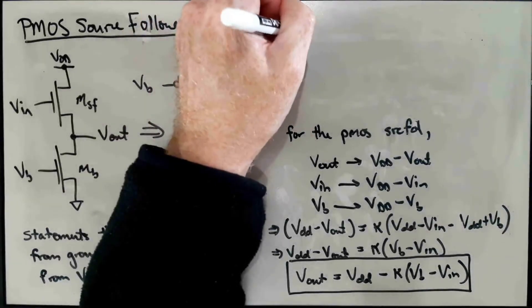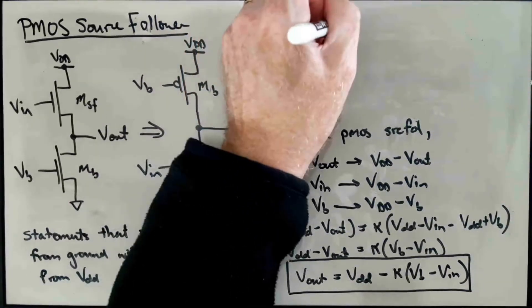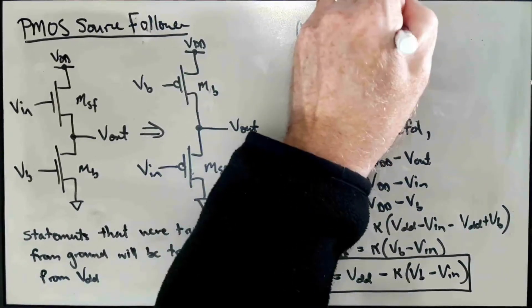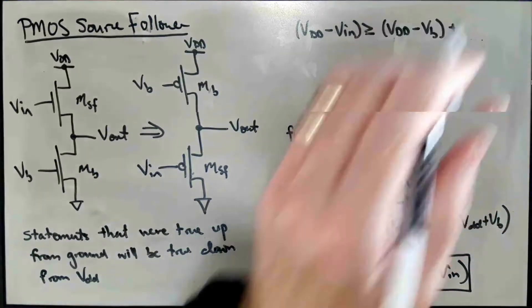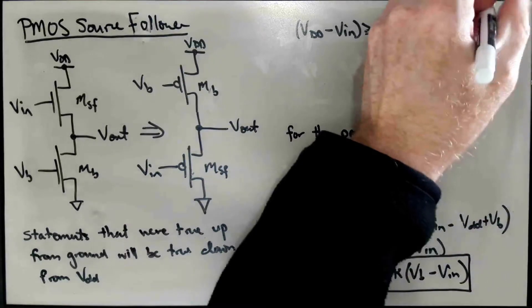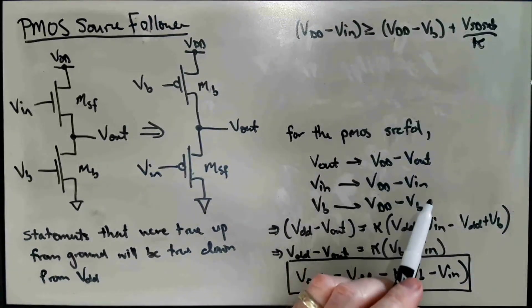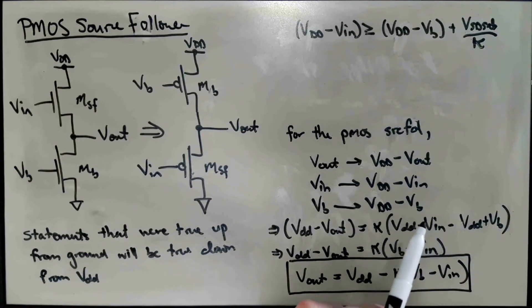So we again need to do this mapping only for this inequality. We had VIN greater than or equal to, so it's VDD minus VIN greater than or equal to VDD minus VB plus VDSsat over Kappa. VDsat actually becomes VSDsat. We could replace VD with VDD minus VD and VDD minus VS for VS. The VDDs would cancel and we would get V source to drain instead of V drain to source.